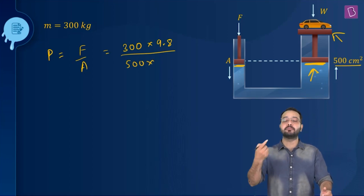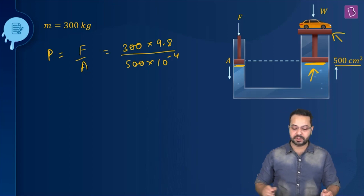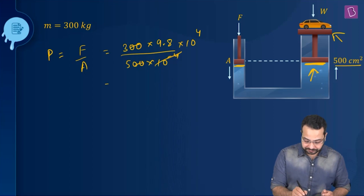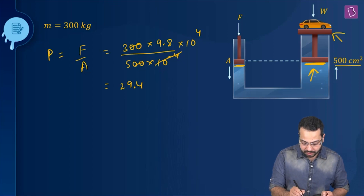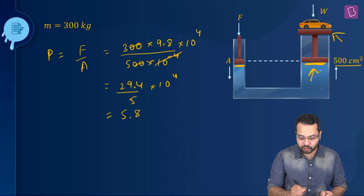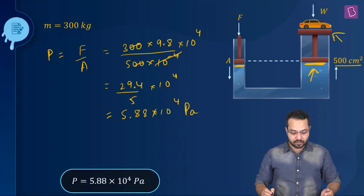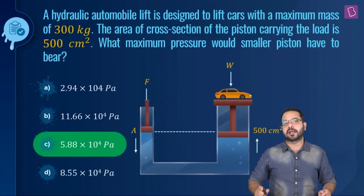Converting 500 cm² to m² gives 500 × 10⁻⁴, so the 10⁴ goes to the numerator. Calculating: 300 × 9.8 = 2940, divided by 5, gives 29.4 × 10⁴ / 5 = 5.88 × 10⁴ Pa. Looking at the options, option C is going to be my right answer.